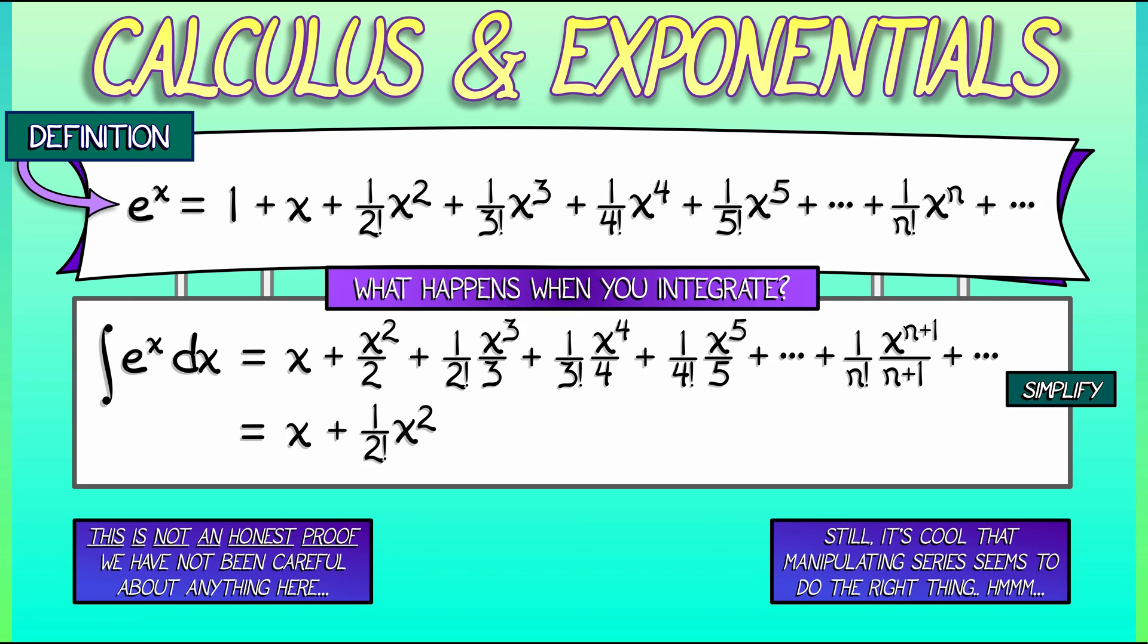The third term, when I take that 1 over 2 factorial and I put an extra factor of 3 in the denominator, by definition, I have 1 over 3 factorial times x cubed. Keep going. All the way down the line, that nth term is going to be 1 over quantity n plus 1 factorial times x to the n plus 1. And once again, we see that just doing things term by term gives us the answer that the integral of e to the x dx is e to the... Wait a minute.